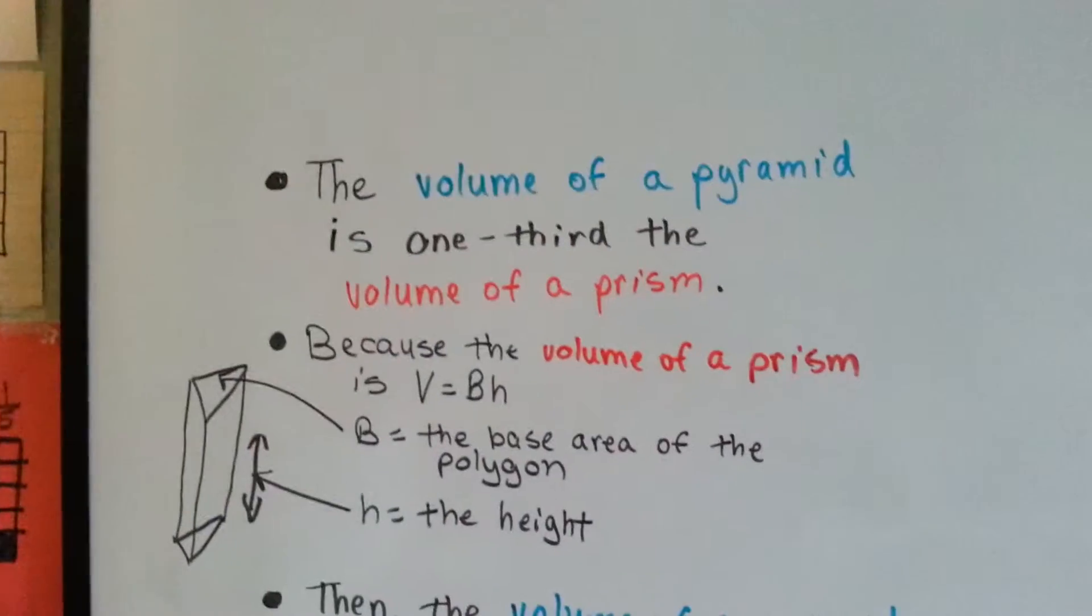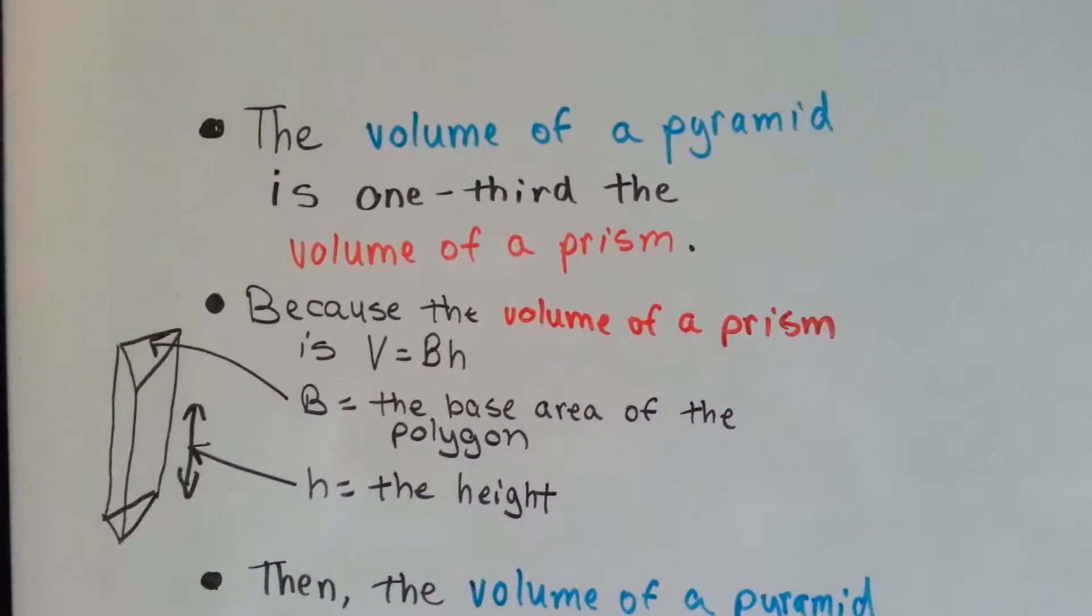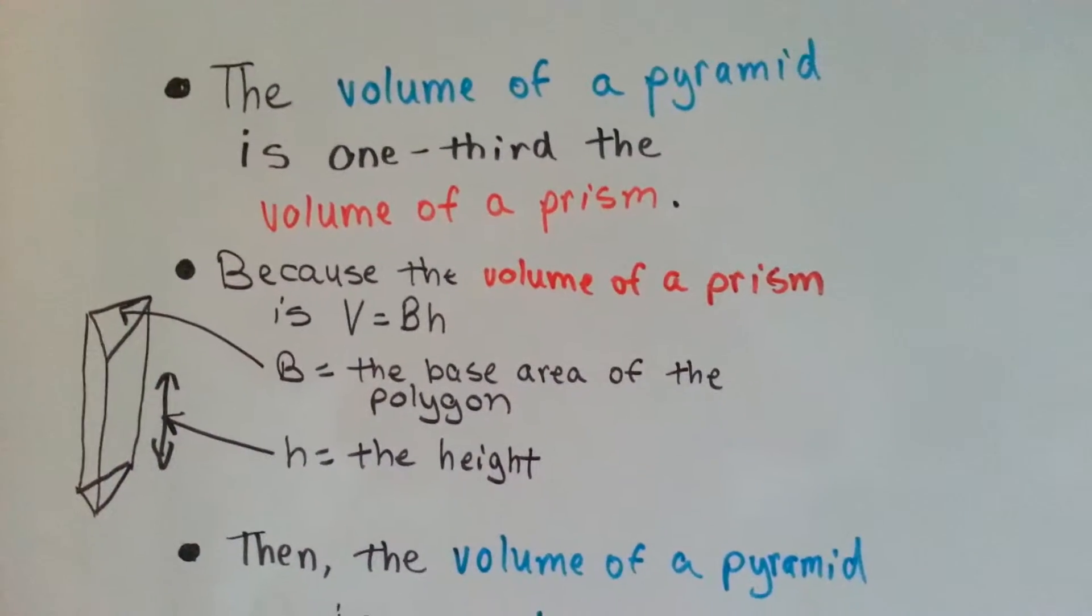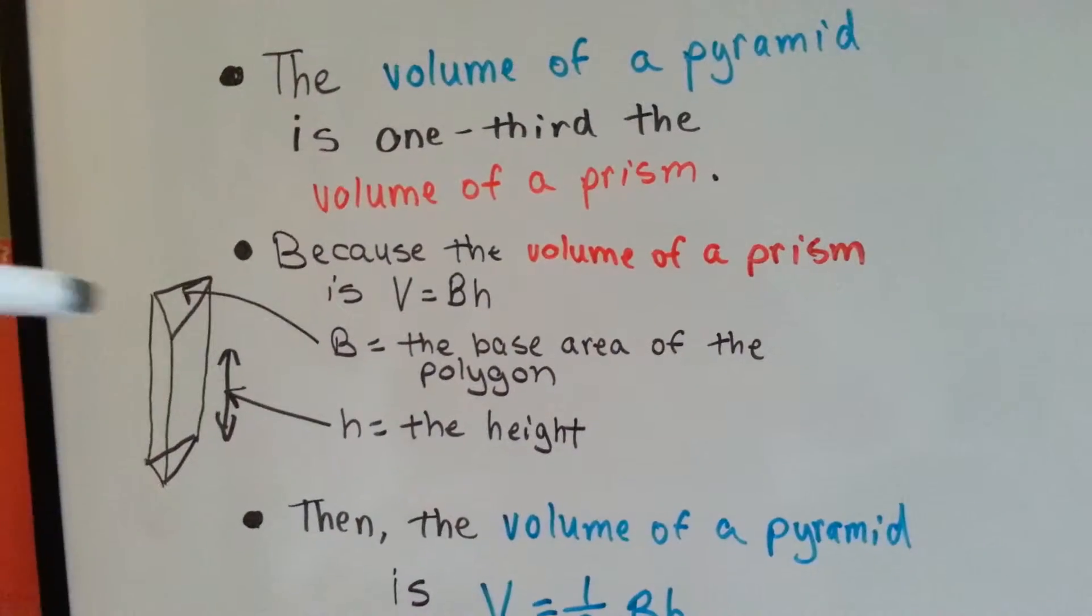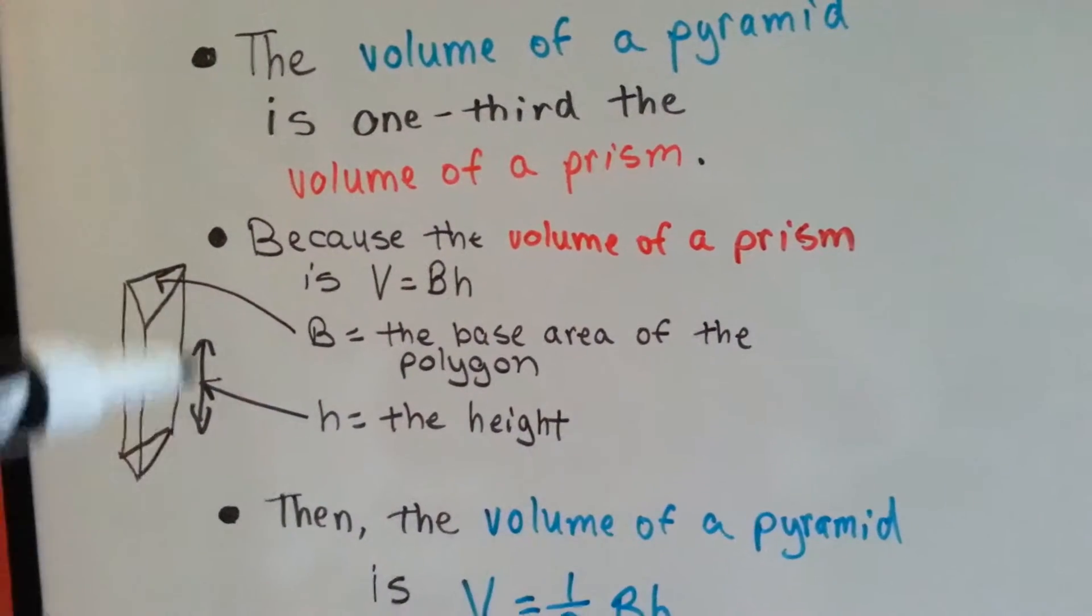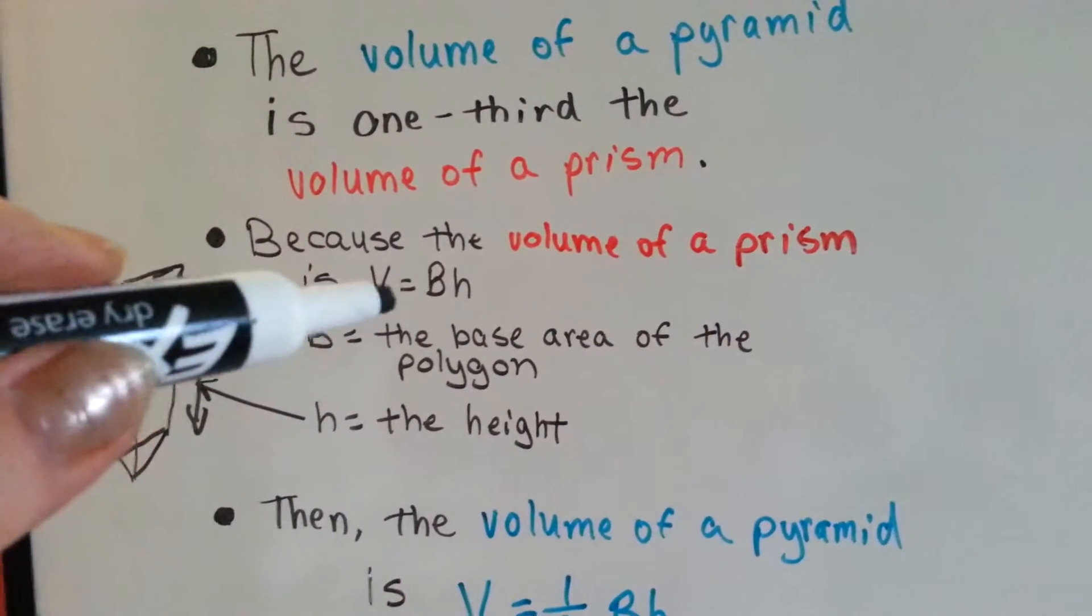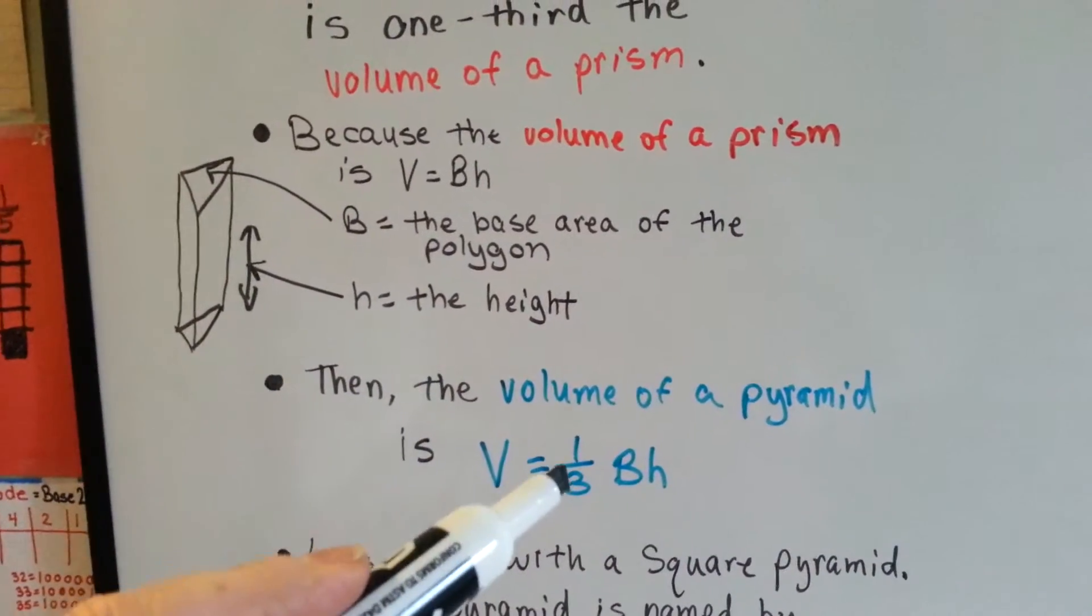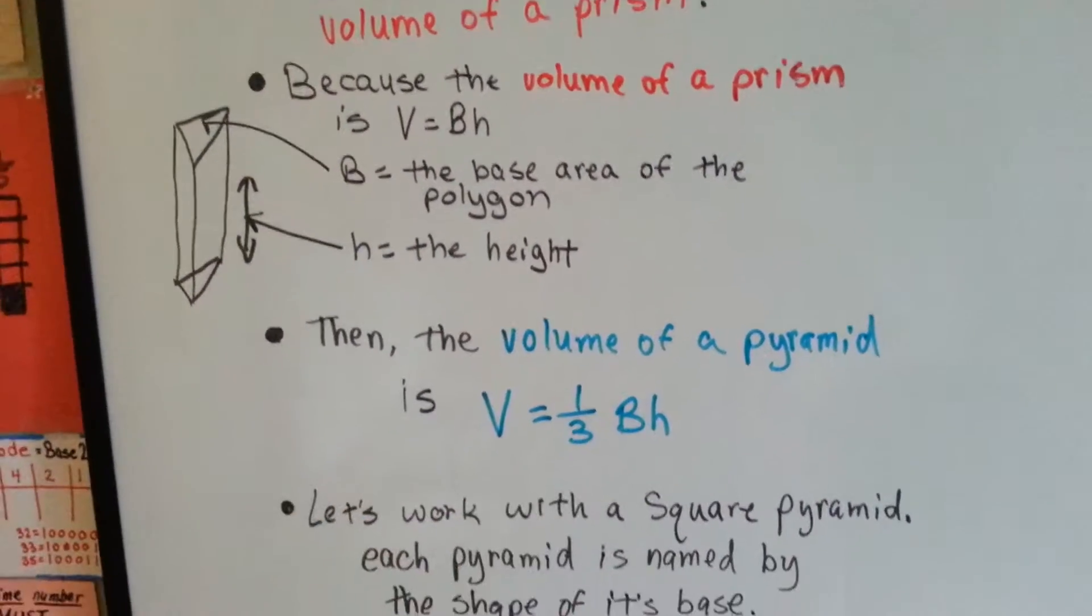The volume of a pyramid is one-third the volume of a prism. Because the volume of a prism, the formula is V equals BH, where B is the base, there's one here and one here, and the height, you do V equals the base times the height. Then the volume of a pyramid is V equals one-third times the base times the height.